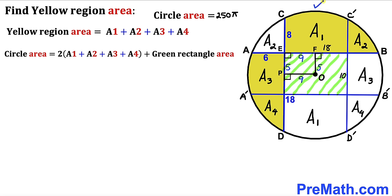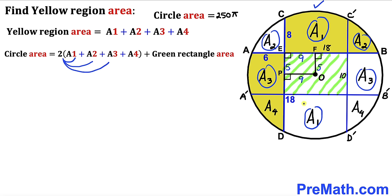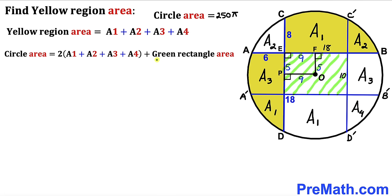The total circle area equals 2·A₁ plus 2·A₂ plus 2·A₃ plus 2·A₄ plus the green rectangle area. So our task now is to calculate the area of the green rectangle whose side lengths are 18 and 10.